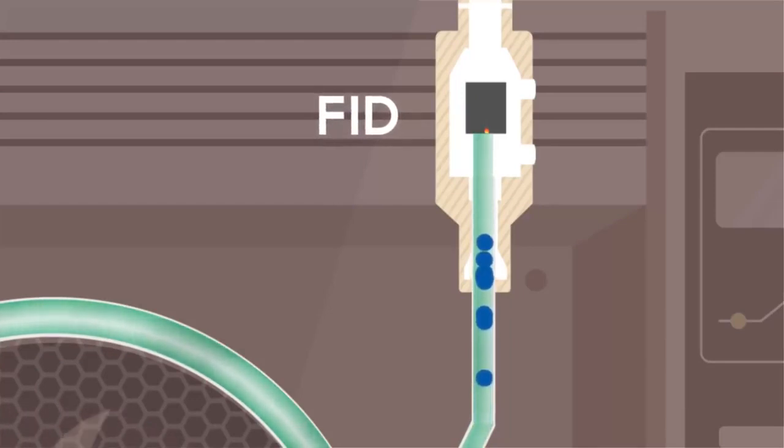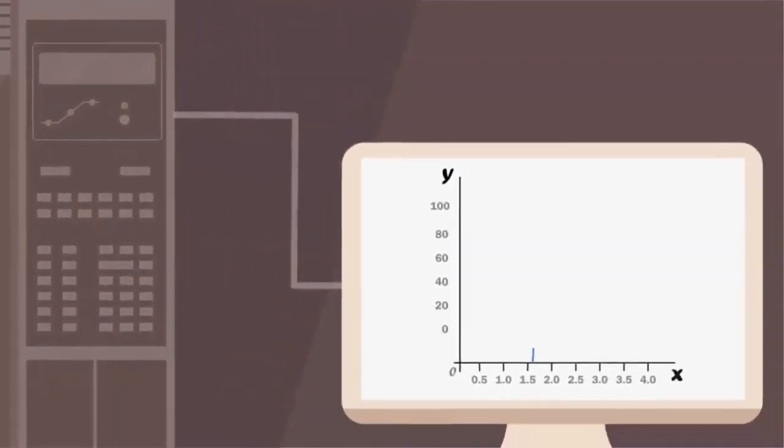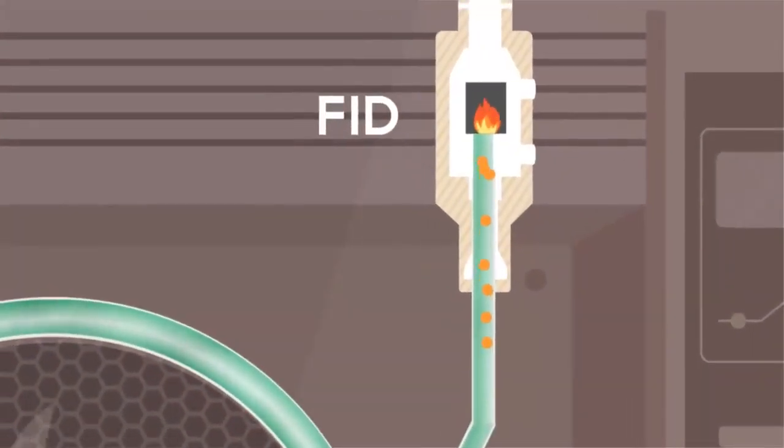The blue compound is burned in the flame, producing electrons. The electrons produce a current, and the computer converts this current into a peak, as we can see.